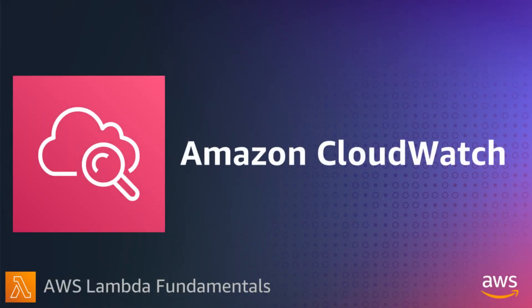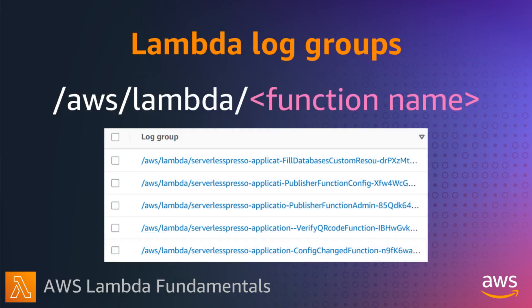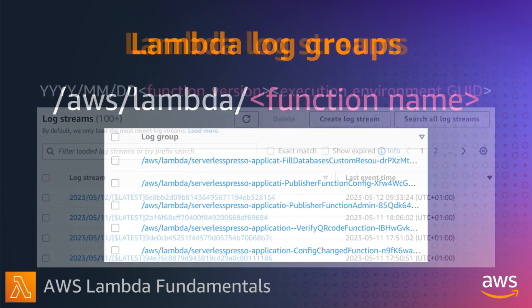All Lambda functions are automatically integrated with Amazon CloudWatch. Lambda monitors functions on your behalf and streams details about each function invocation to CloudWatch logs. Log groups are a standard part of CloudWatch and used to organize all logging. Any log generated by a Lambda function uses the naming convention /aws/lambda/ followed by the function name.